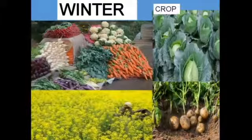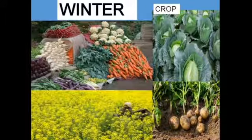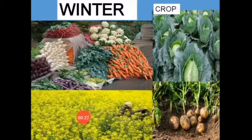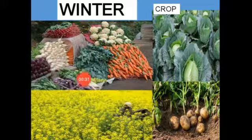Crops and vegetables like cauliflower, cabbage, carrot, potato, mustard, radish, and wheat are grown during the winter season. You can see mustard, potato, cabbage, cauliflower, carrot, and some other types of vegetables here.